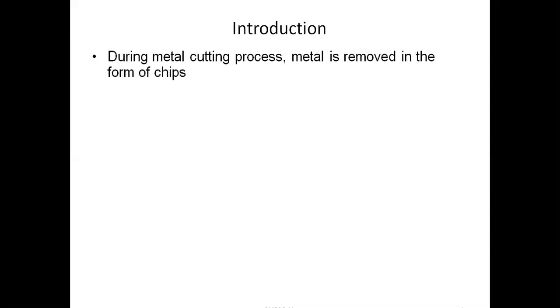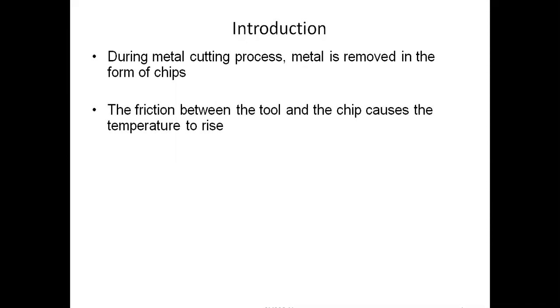This is also a small unit. During the metal cutting process, metal is removed in the form of chips. As we recalled in the previous three units — in lathe, milling, shaper, planer, and slotter — the metal is removed in the form of chips. During this operation, there is friction between the tool and workpiece, and the chips which are removed cause the temperature to rise.